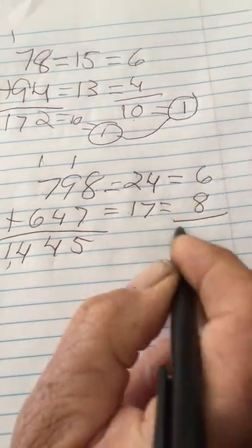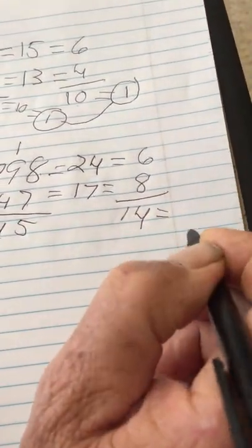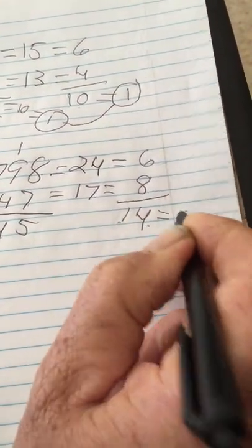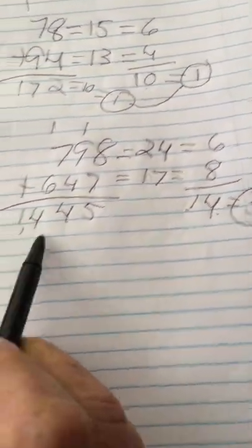In this case, 6 plus 8 equals 14. And then, adding them together for single digit, 1 plus 4 equals 5. Let's take our answer and see how it works.